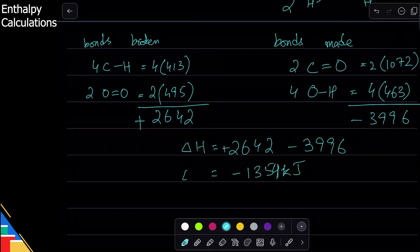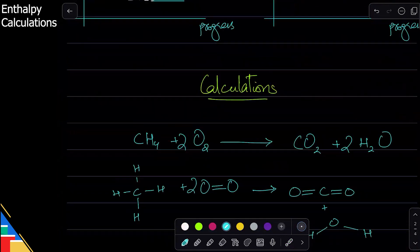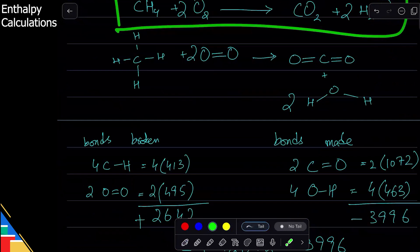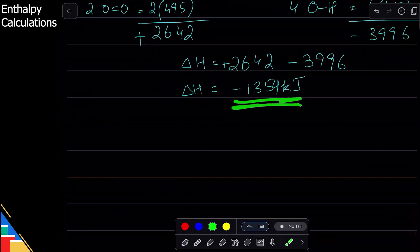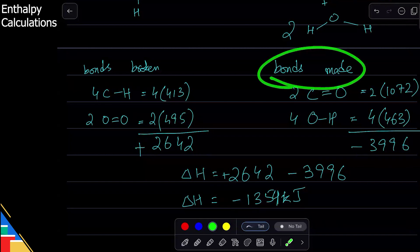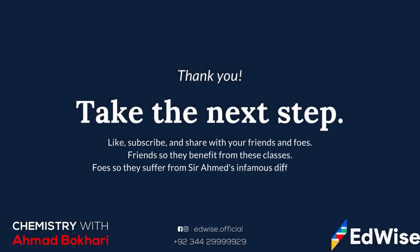So this is telling me that this reaction is exothermic overall because it releases more energy than it absorbs. And why is that? Because the energy of bonds made is more than energy of bonds broken. Be very careful not to say that bonds made are more than bonds broken. It's the energy of those bonds. So energy of bonds made is more than the energy of bonds broken.